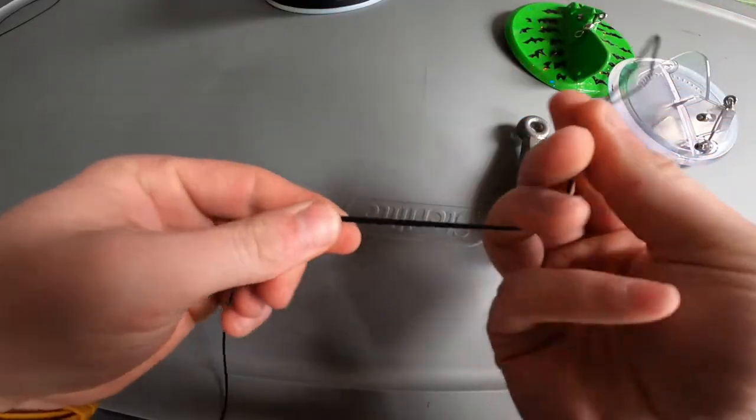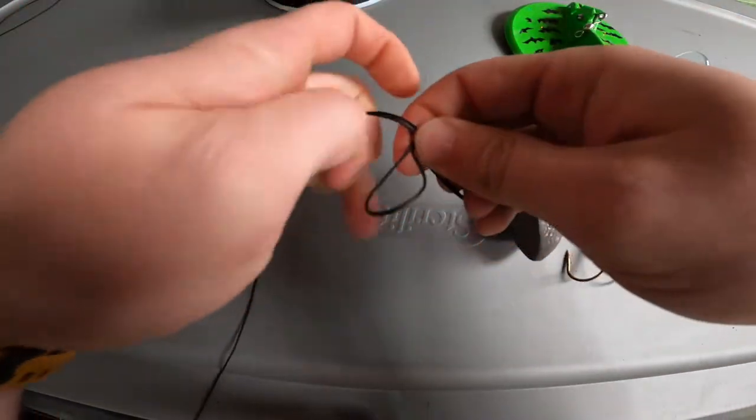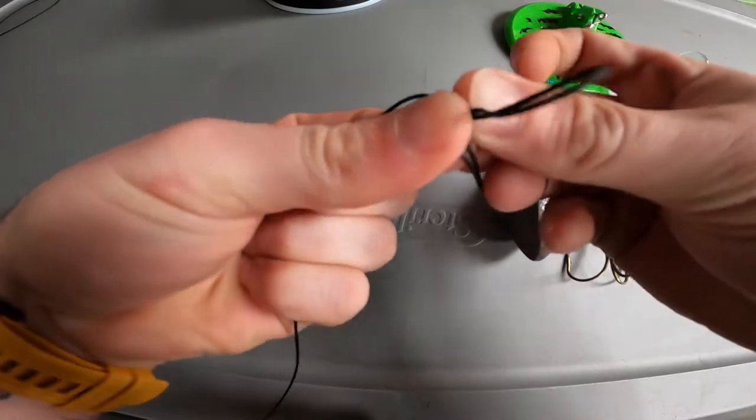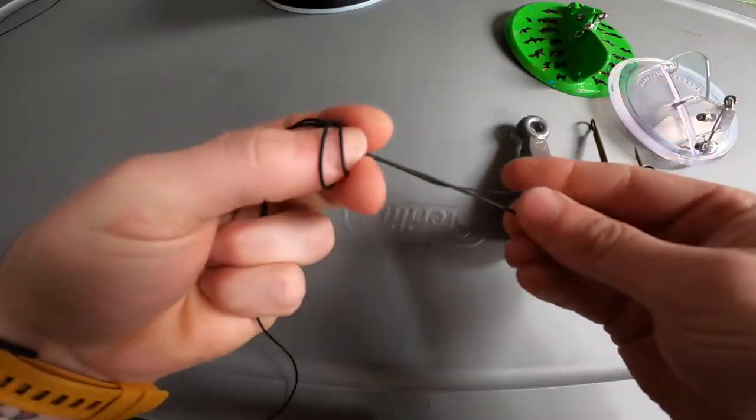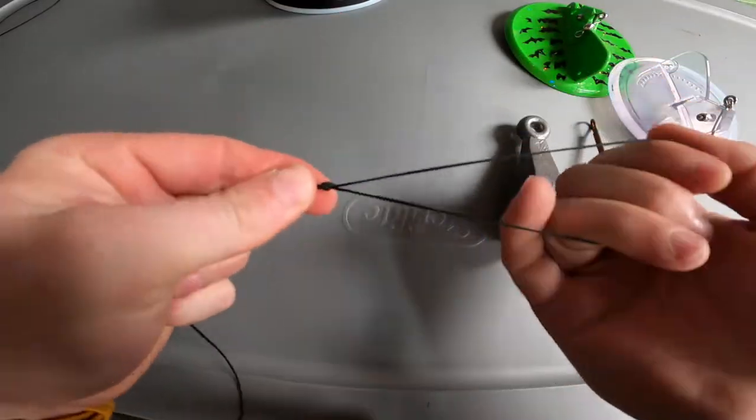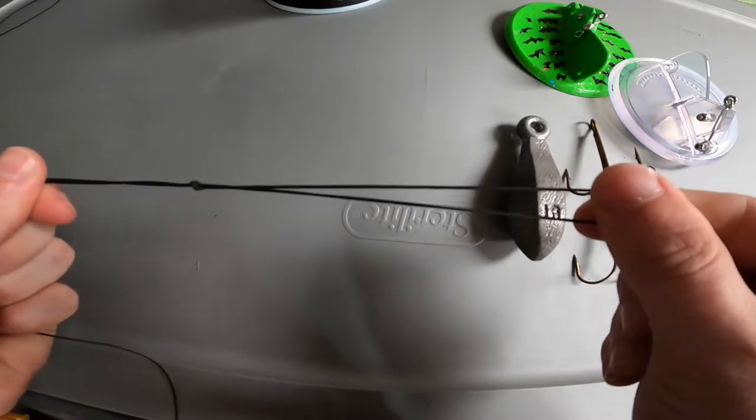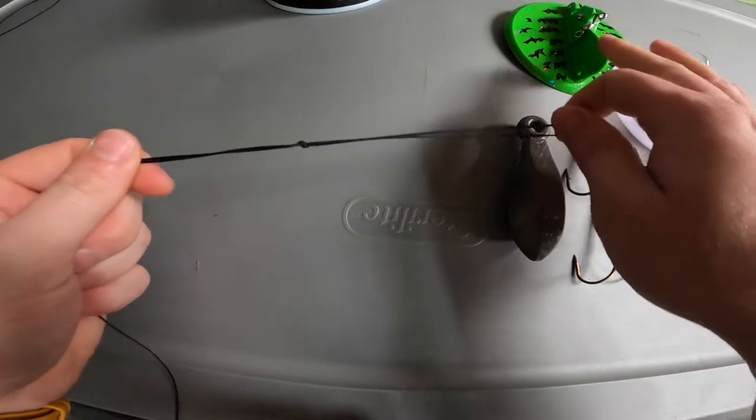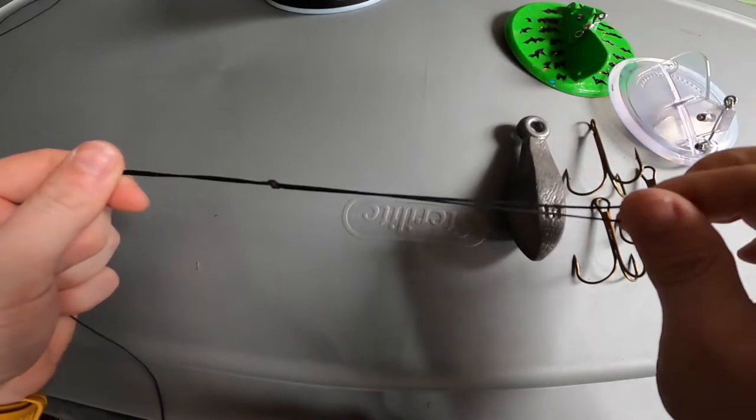Just an overhand knot to create your loop. You'll want to make that bigger or smaller depending on if you plan to use dipsy divers. You want it a little bit bigger so it'll slip over the entire dipsy diver. If you're just using a weight, you can go smaller than this.